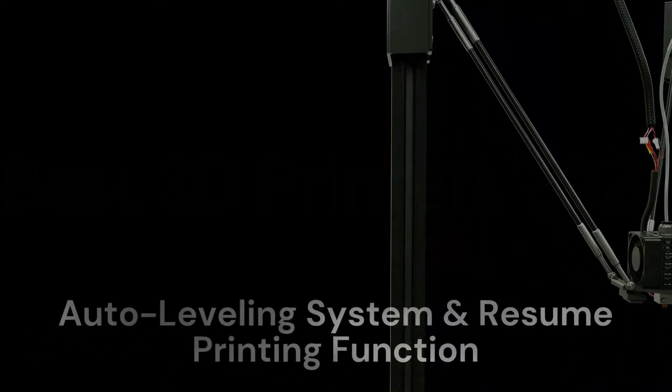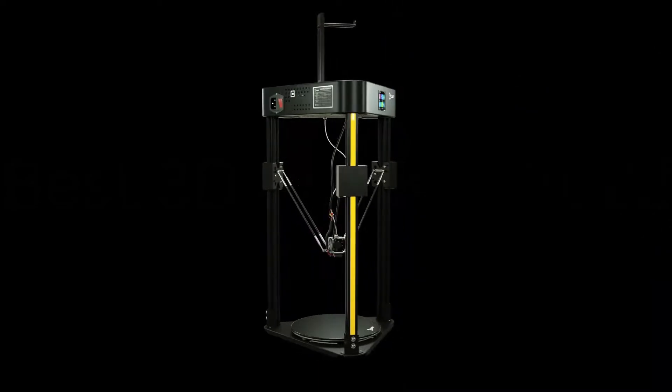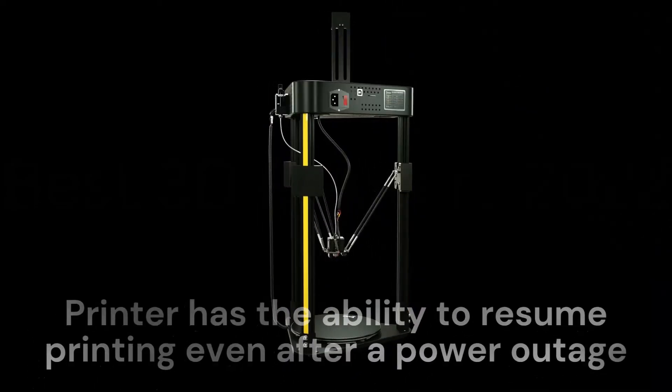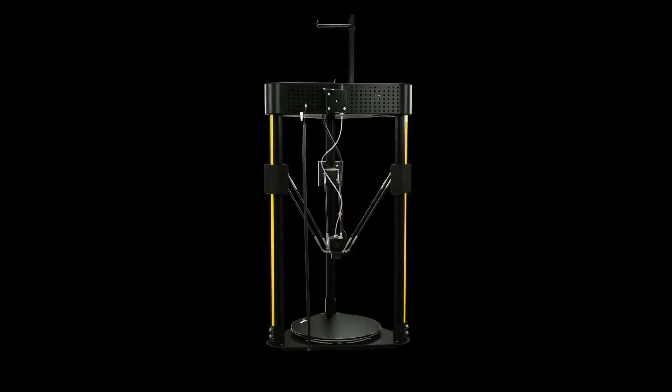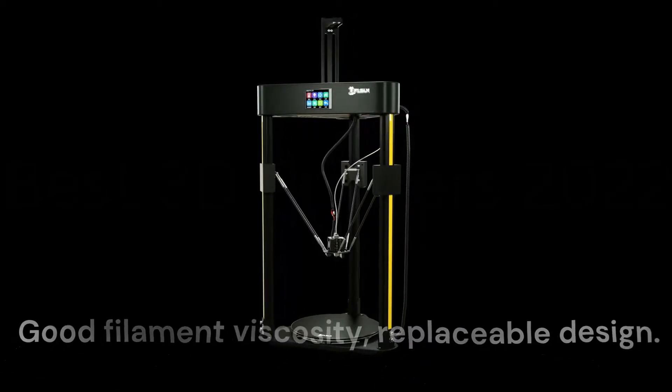Auto-leveling system and resume printing function and removable lattice bed, automatic leveling system, easy to start printing. FLSUN SuperRacer 3D printer has the ability to resume printing even after a power outage or lapse occurs, coated lattice glass platform, good filament viscosity, replaceable design.